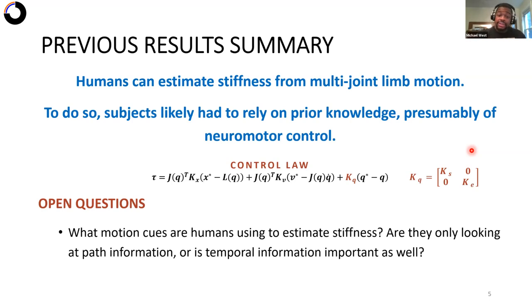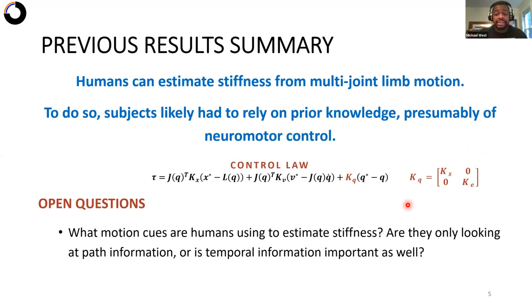So just to summarize, this control law is very complex, yet subjects were able to identify changes to a single parameter within it. And again, the question still remains, how? And what we aimed to ask was, are they looking at path information or is temporal information important as well?